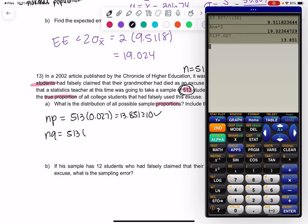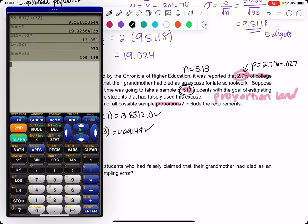It's at least 10. I'm pretty sure requirements are met because 1 minus .027 will be much bigger. It's .973. And if I times that by 513, it should be much larger. 499.149. So requirements are met. We can say the proportions or p-hat is approximately normal. It follows the normal distribution because it met the requirements. And then we'll find the mean, which is just P, so .027.